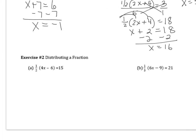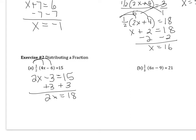Now let's practice a couple where we're distributing a fraction. Remember: when you multiply something by a fraction, it's like multiplying the numerator of that fraction by the term inside the parentheses and then dividing by the denominator. 1/2 is easy to work with — 1/2 of 4X gives you 2X, and 1/2 of negative 6 is negative 3. So 2X − 3 = 15. Adding 3 to both sides gives 2X = 18, and dividing by 2 gives X = 9.